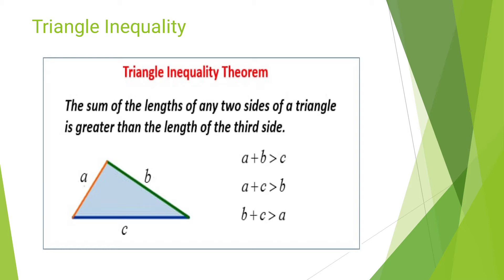A triangle has three sides: side a, side b, and side c. If you add any two sides, the result is greater than the third side. For example: a + b is greater than c; a + c is greater than b; and b + c is greater than a.